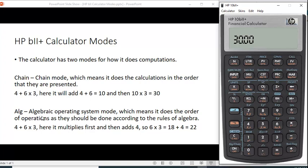Now, the algebraic mode does it in the order of operations as they should be done according to the rules of algebra. The rules of algebra tell us we do multiplication before addition. So in this case, if we had 4 plus 6 times 3, we would do 6 times 3, and then add 4 to it.